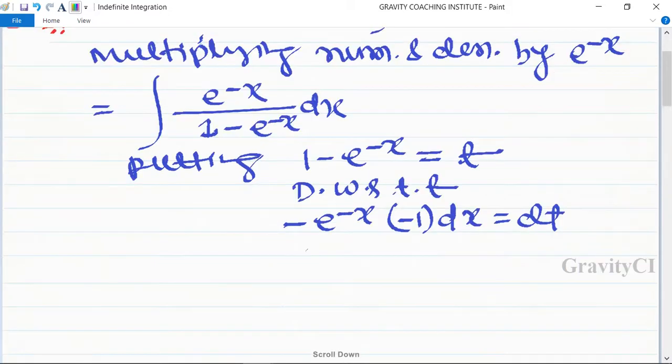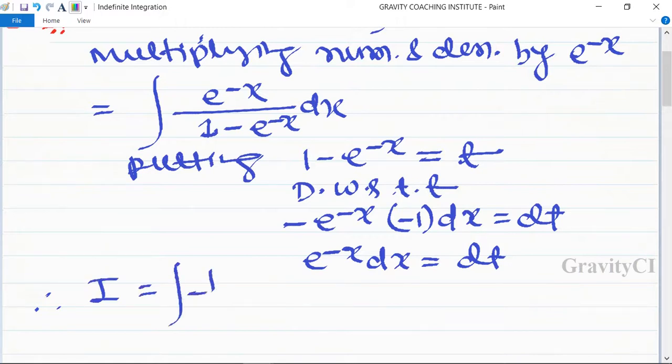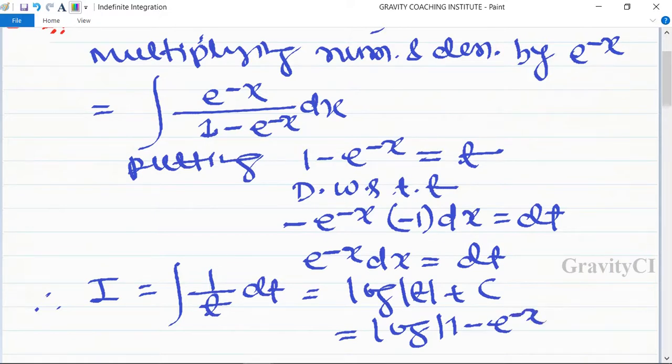Since minus times minus gives plus, e^(-x)dx = dt. Therefore, the integral I becomes ∫(1/t)dt = log|t| + C. Substituting back, we get log|1 - e^(-x)| + C, which is the required answer.